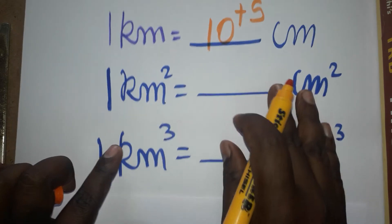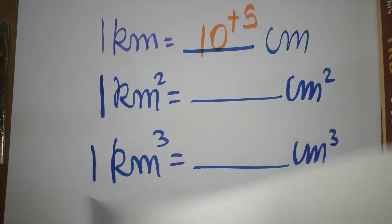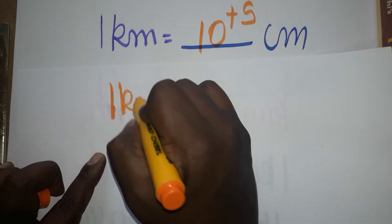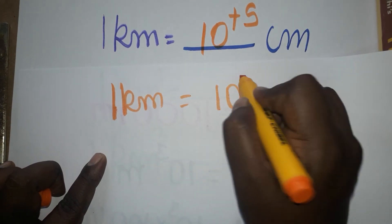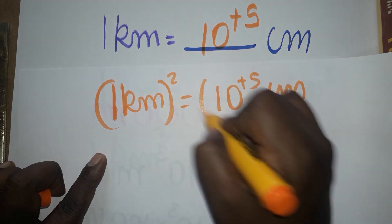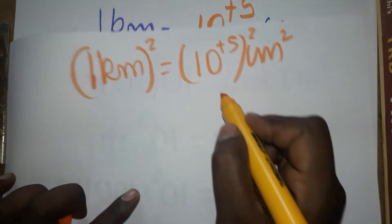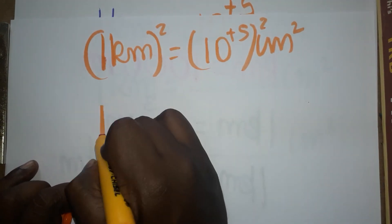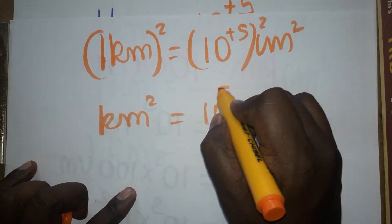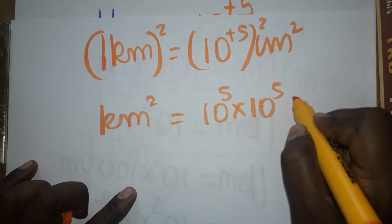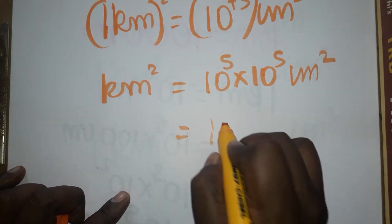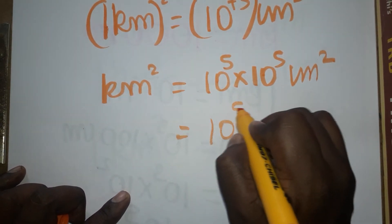Now for one kilometer square — it's very easy. We already know one kilometer is 10 power 5 centimeters. So one kilometer square means we square both sides: 10 power 5 into 10 power 5, which gives 10 power 5 plus 5 centimeter square.